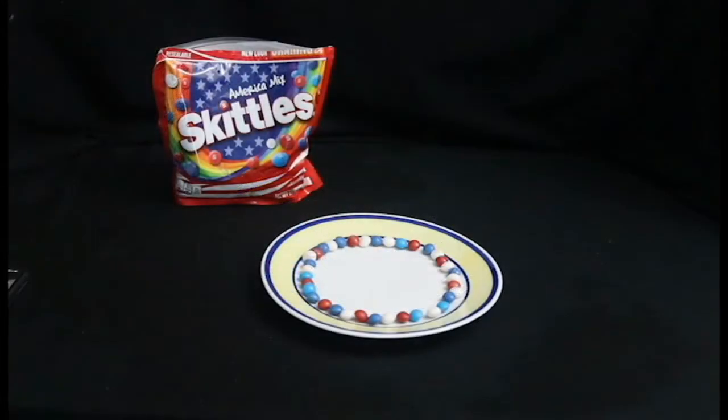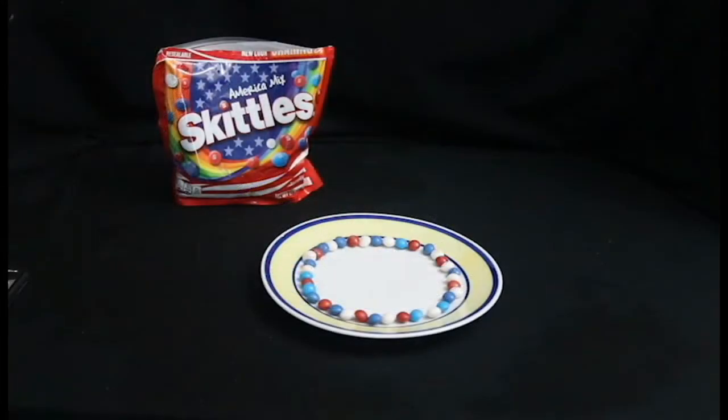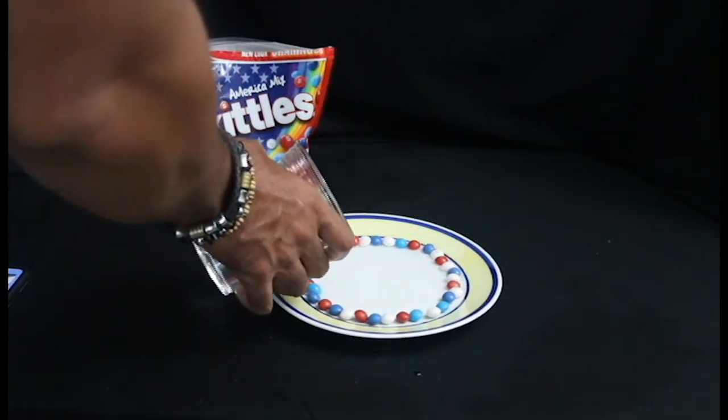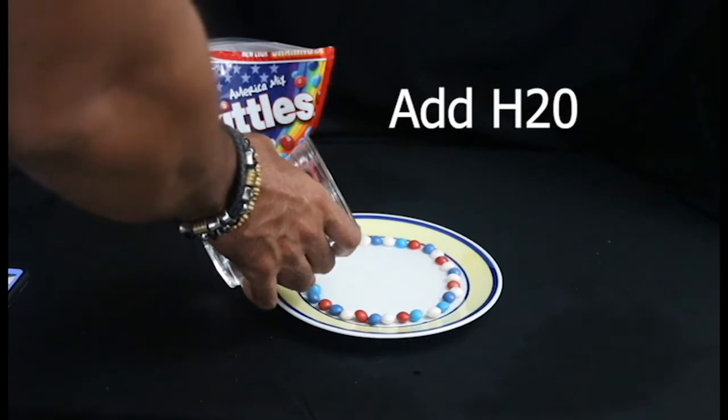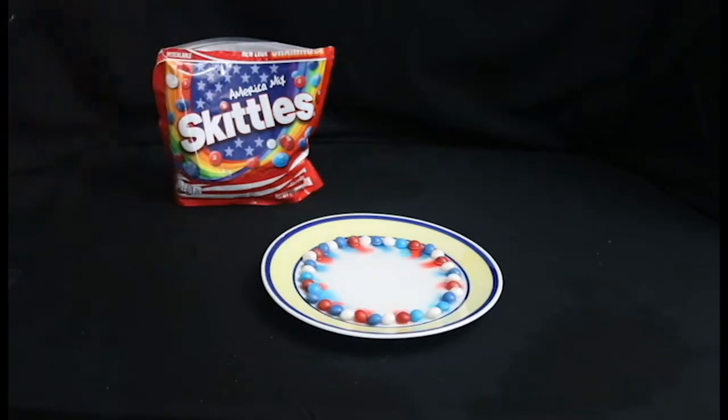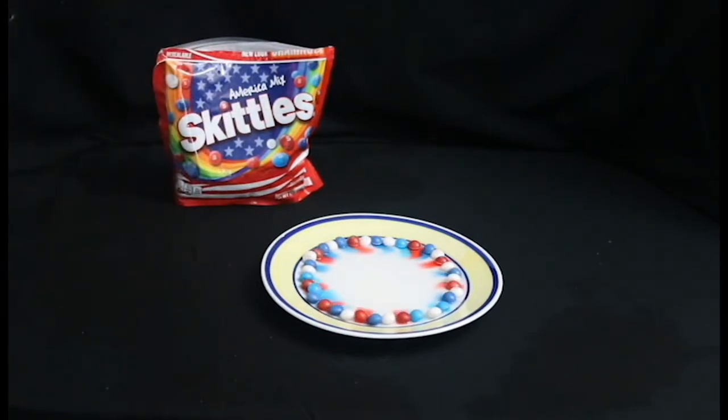After that, we're going to pour some water carefully into the middle of our plate. Once we pour our water into the middle of the plate, so that it actually touches the actual Skittles and their pattern, we're going to watch and see how the colors are being displaced to the middle of the plate itself.